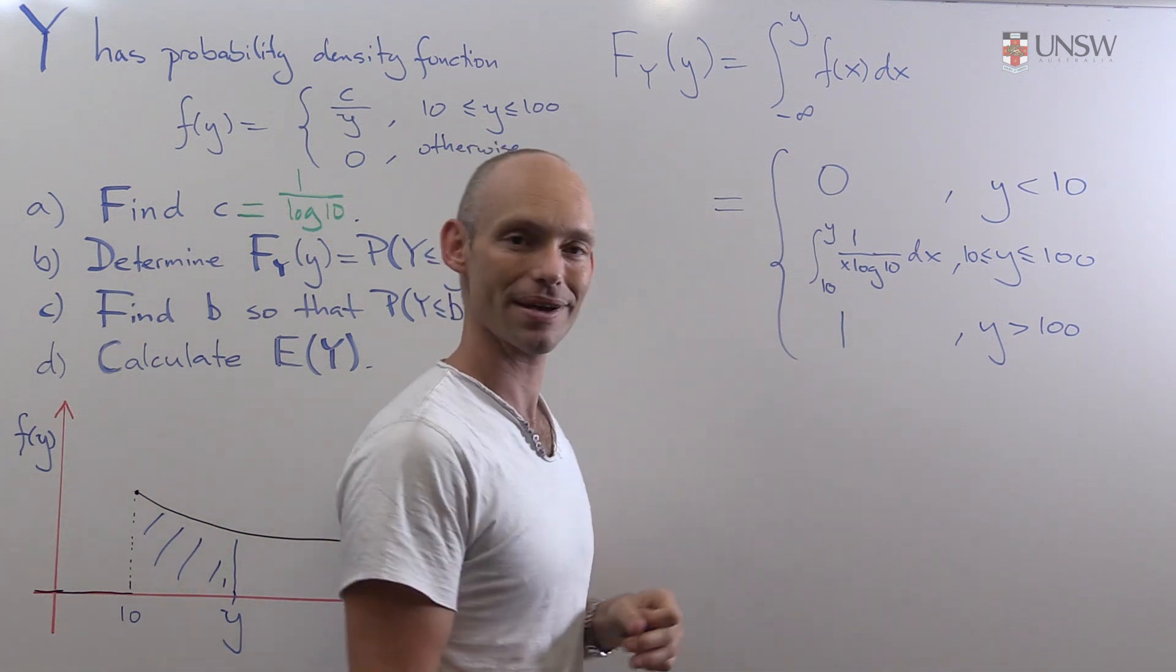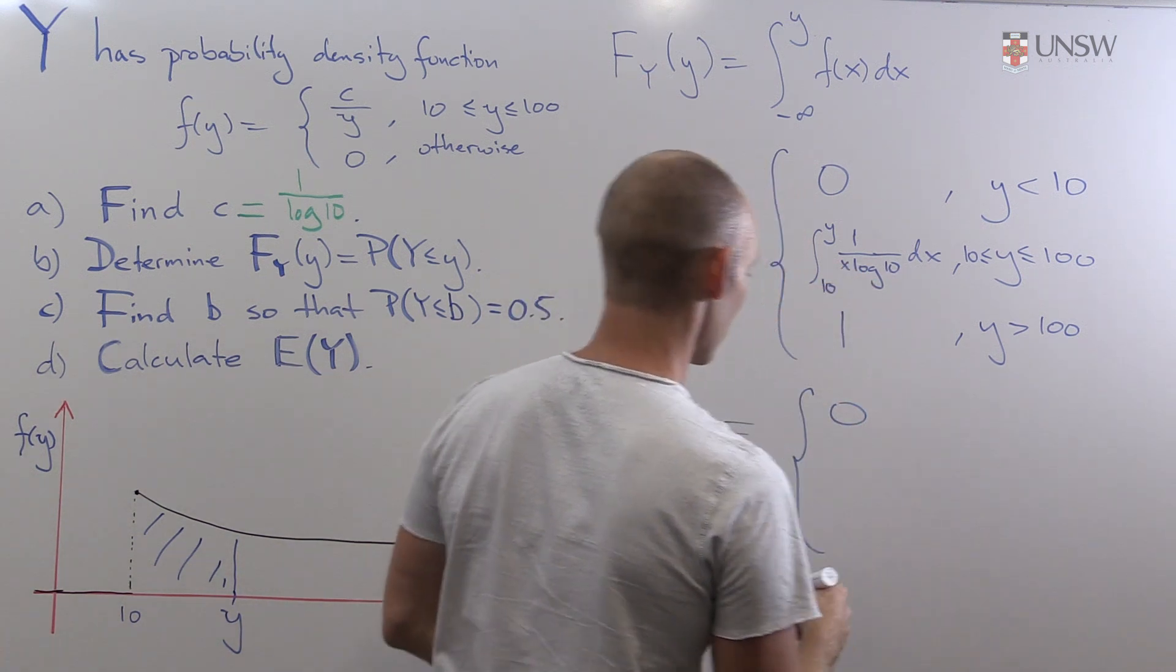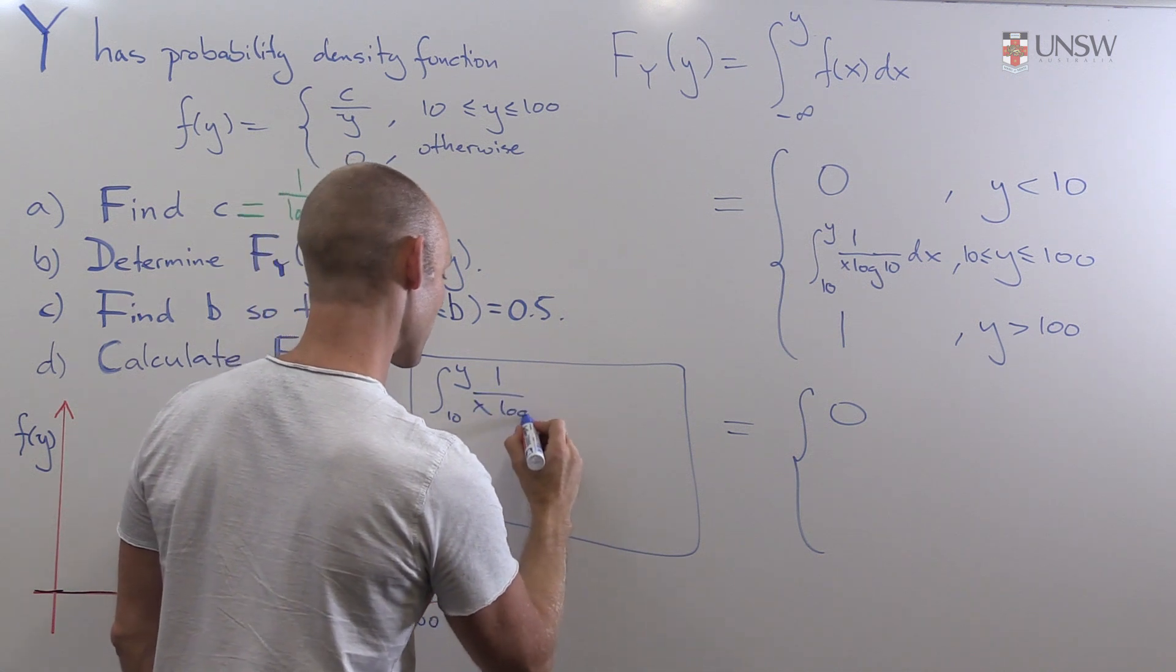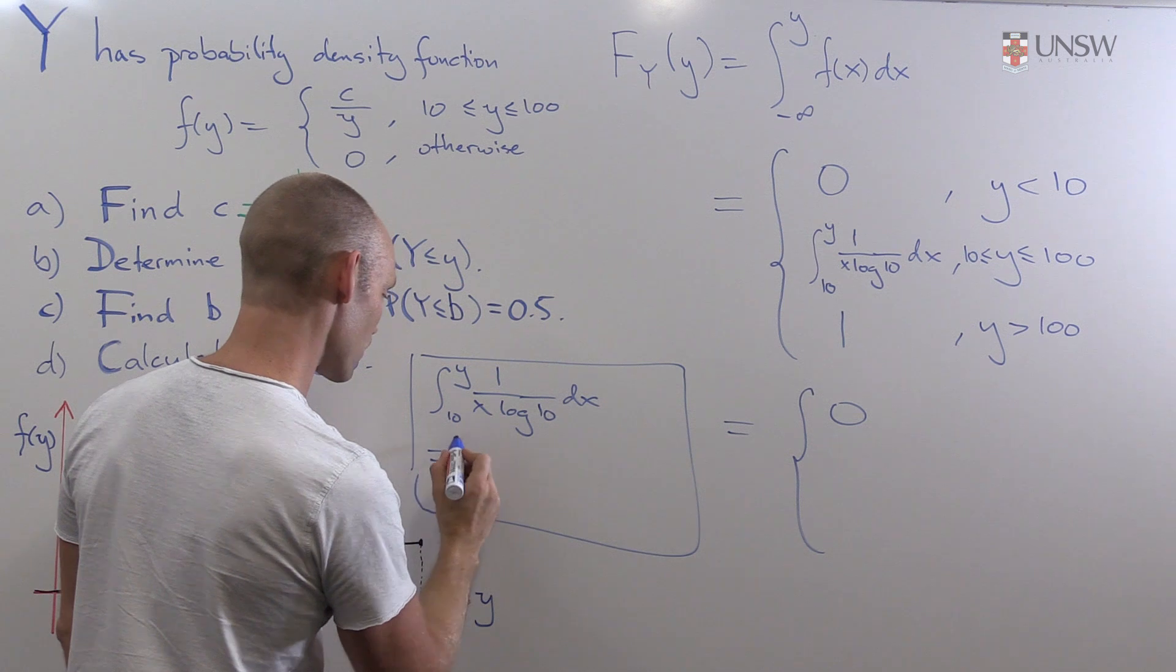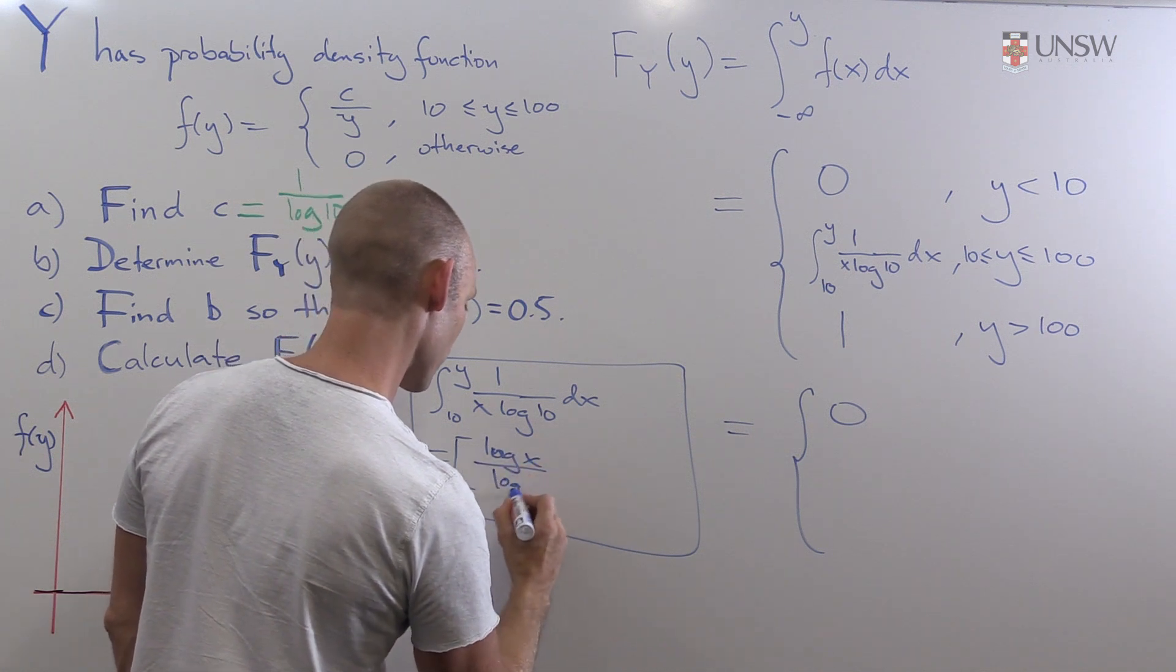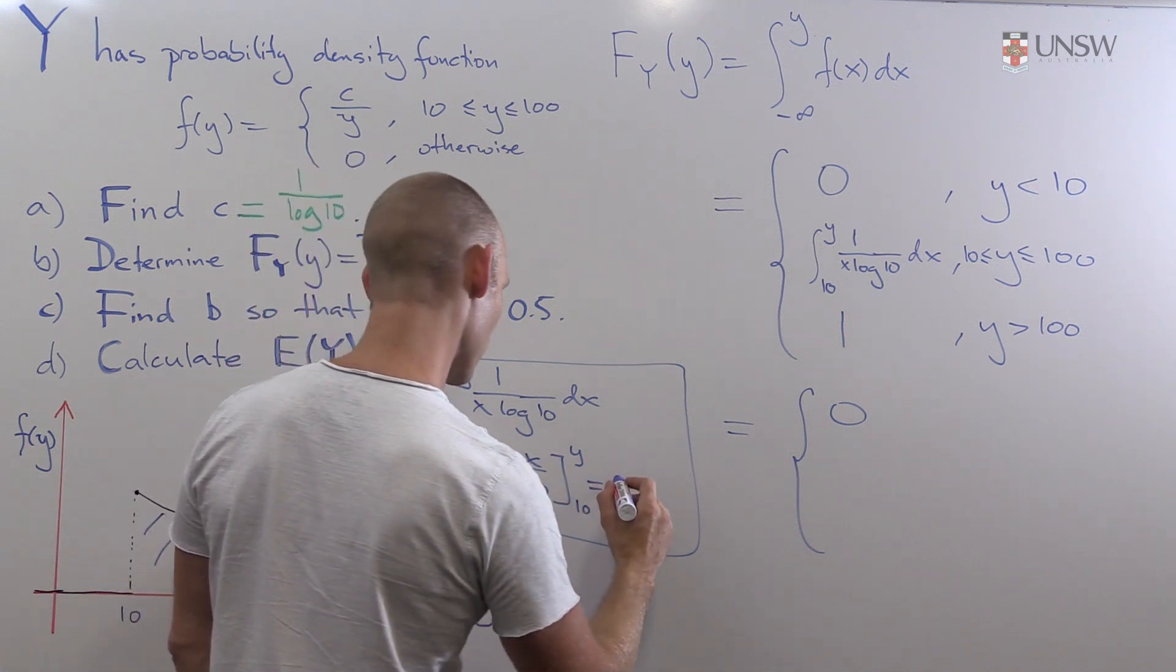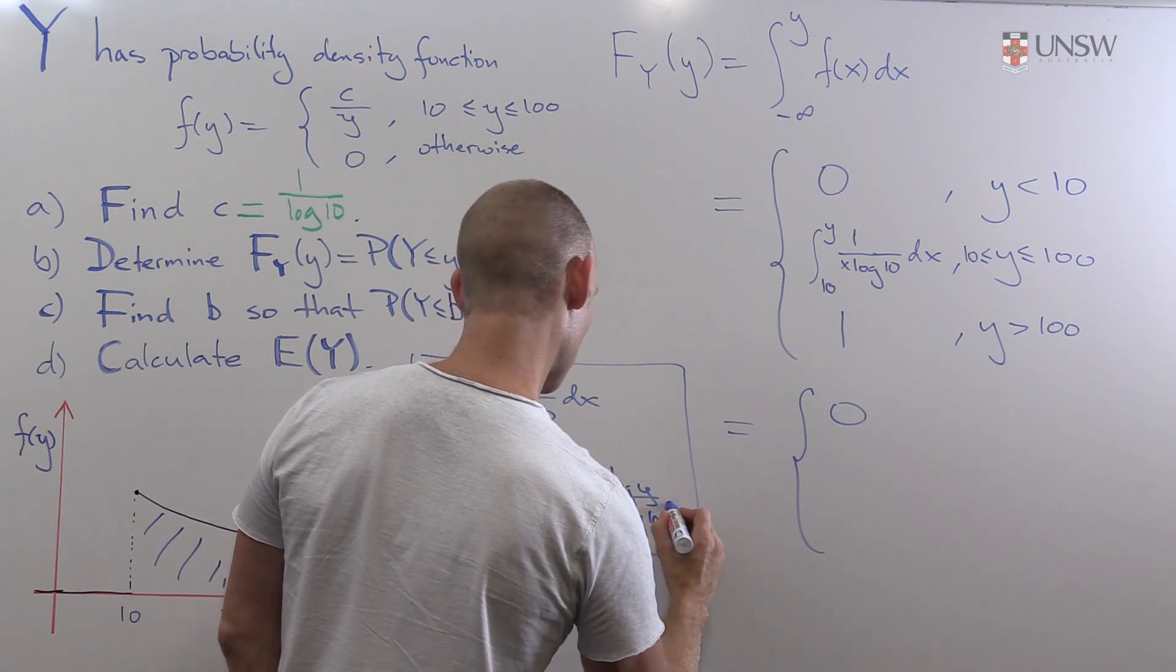So we just have an integral here to work out. And that will give us our answer. So we have the integral from 10 to y of 1 over x log 10 dx. And that's equal to the logarithm of x over the logarithm of 10, and that's from 10 to y. And that will give us log y over log 10 minus log 10 over log 10. So in other words, it will give us log y over log 10 minus 1.